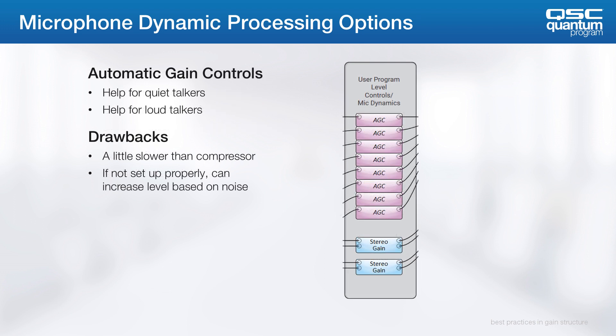Your other option is to use an automatic gain control. With this, you get help for quiet talkers and loud talkers. However, it reacts slower than a compressor does. Furthermore, if the signal-to-noise ratio of that microphone is not tuned properly, then the automatic gain control will exacerbate the issue.